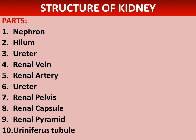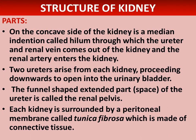Each kidney weighs about 125 to 170 grams in males and 115 to 155 grams in females. There are nine parts of the kidney: number one, nephron; number two, hilum; number three, ureter; number four, renal vein; number five, renal artery; number six, renal pelvis; number seven, renal capsule; number eight, renal pyramid; and number nine, uriniferous tubule.